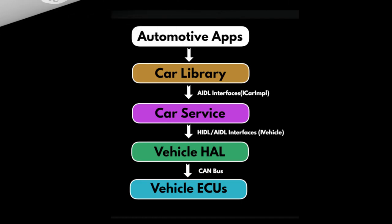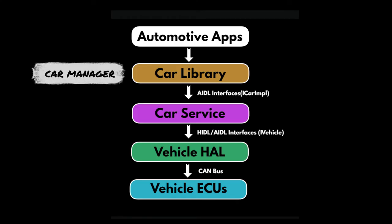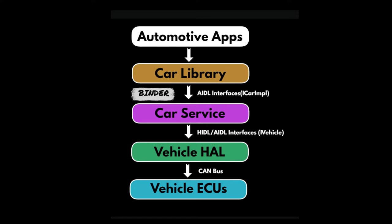This diagram explains how the automotive modules are structured. On the top, we have the automotive apps which communicate with the car library. Normally, we use the car manager classes to get hold of the services. The library communicates over binder using the AIDL interfaces with the car service. The car service communicates over binder IPC using HIDL or AIDL interfaces. HIDL is being replaced by the AIDL interface, so in the future all the HIDL files will get replaced by AIDL.